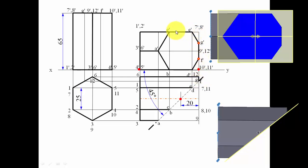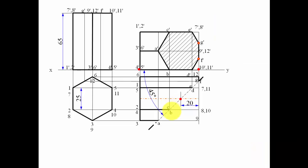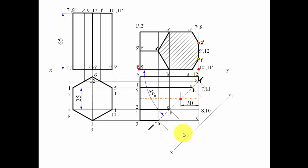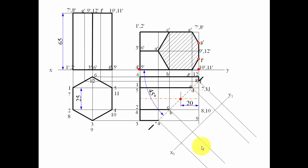The sectional front view and sectional top view are done. Now we make the true shape of the section. To see the true shape you look at the object from a perpendicular direction to the cutting plane. We place a mirror or auxiliary plane (X1Y1 line) and draw perpendicular lines from all seven intersection points A through G.